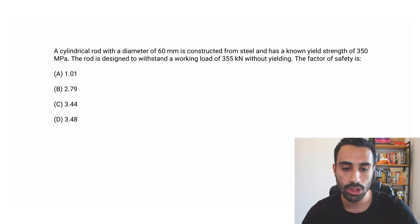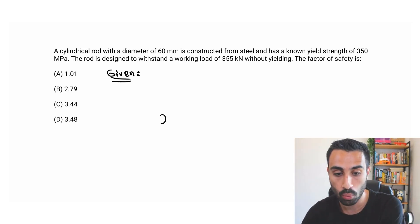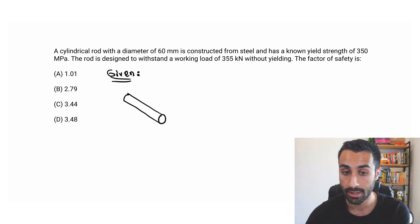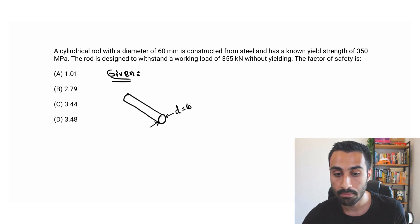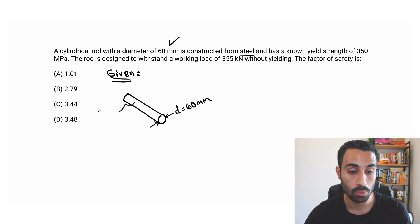Let's start by visualizing what we're given. We have a cylindrical rod, so let's draw that — it will have a circular cross-sectional area. When they say rod, always visualize something like this with a circular cross section. The diameter of this rod, D, is 60 millimeters.